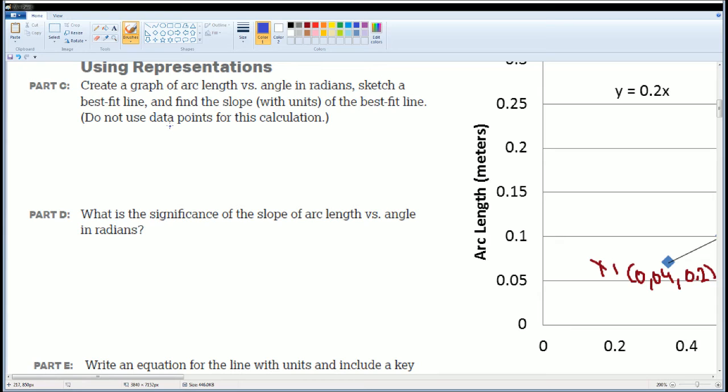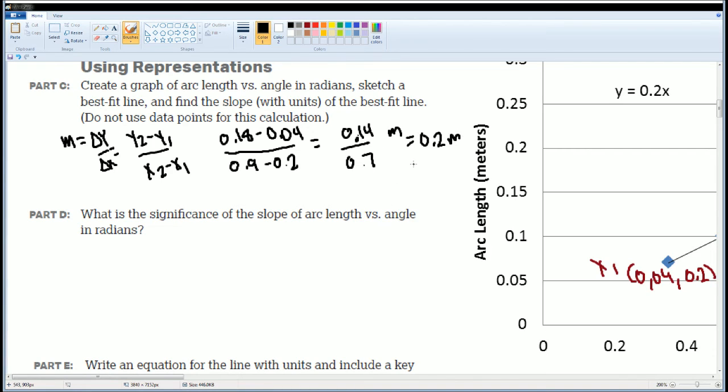We have our equation. Slope is defined as m equals delta y over delta x, which is y2 minus y1 divided by x2 minus x1. Based on the points, you should have 0.18 minus 0.04 divided by 0.9 minus 0.2. In the calculator, you should get 0.14 over 0.7, which equals 0.2 meters. 0.2 meters is also given here on Excel when you look at it.